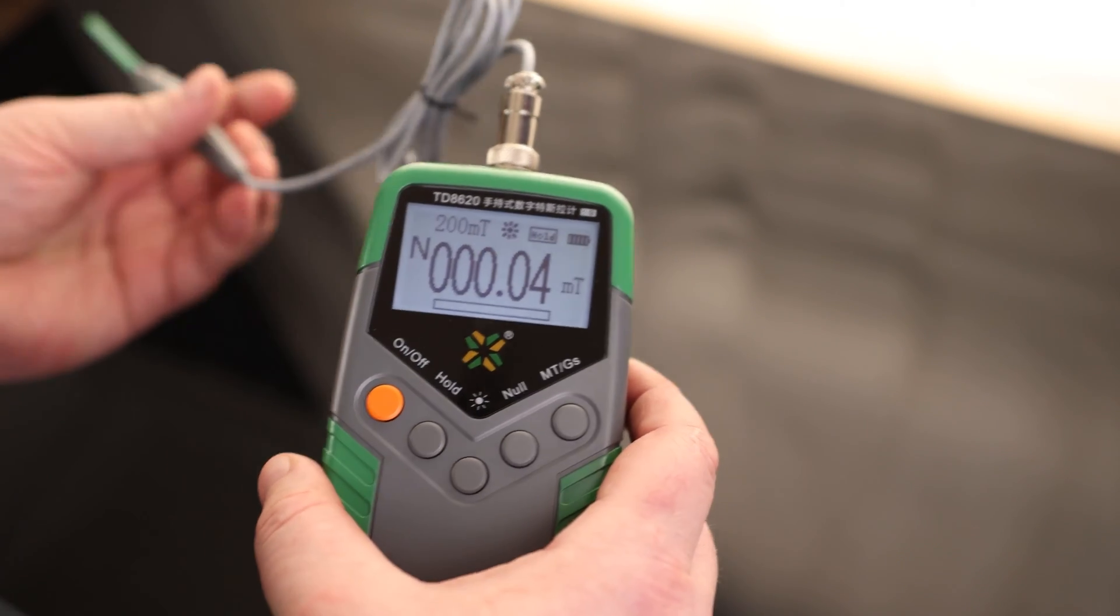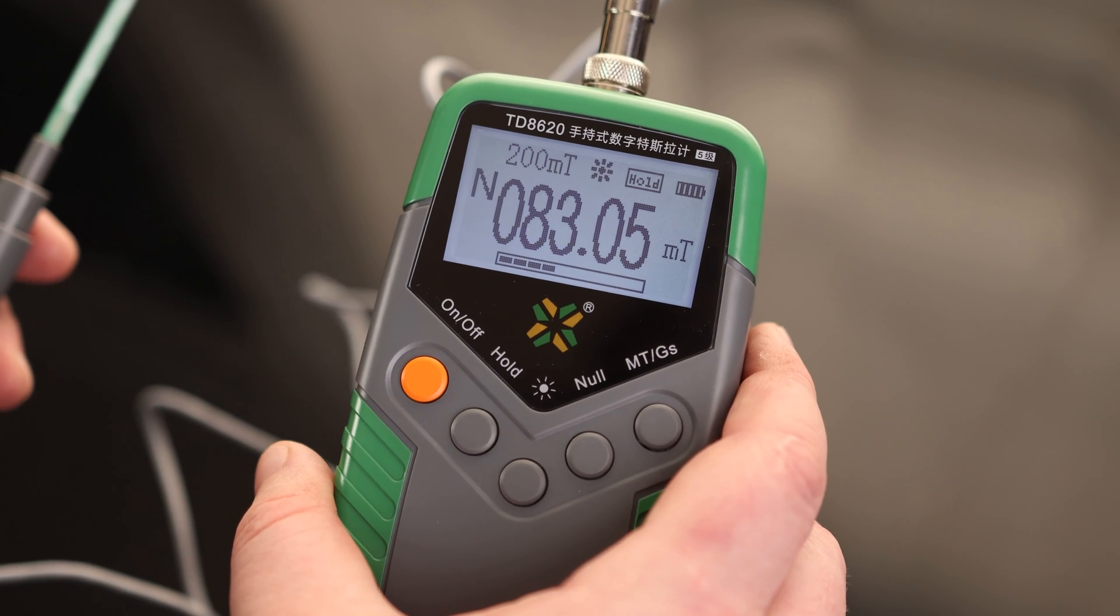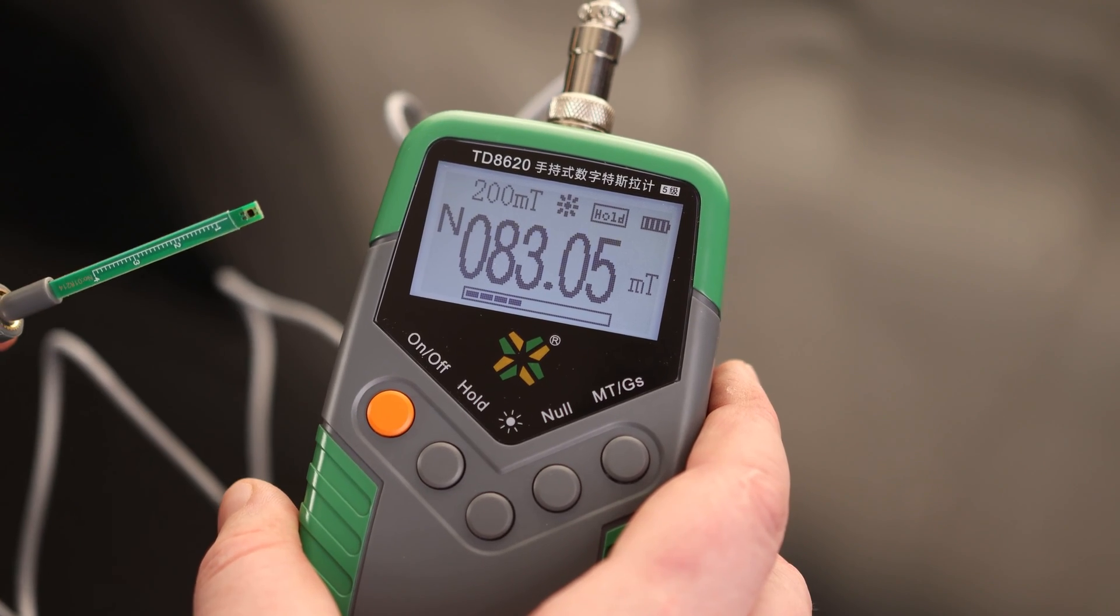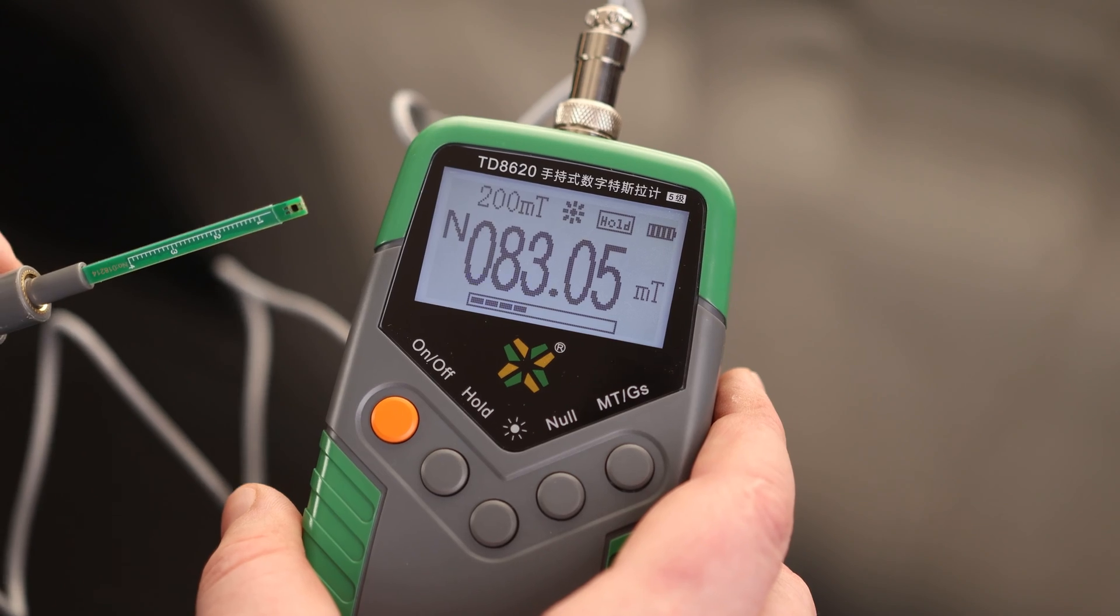So if we bring this closer to a magnet, we can see that the highest value I got was 83.05. So if you have a varying reading on here, we can get the absolute maximum that this was able to read.